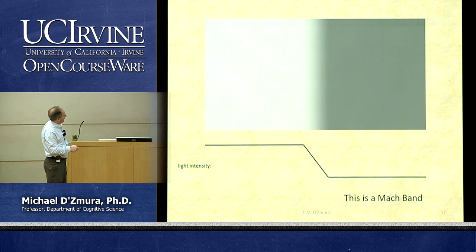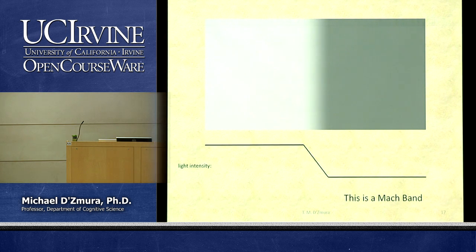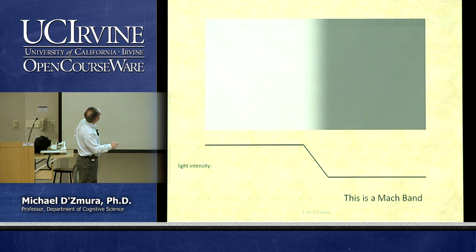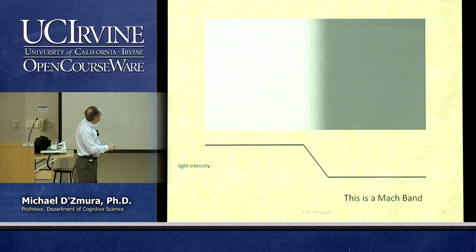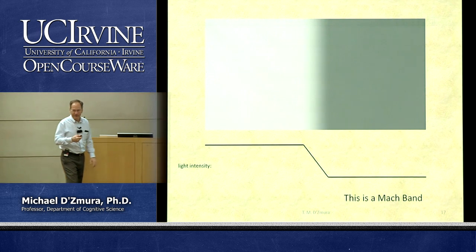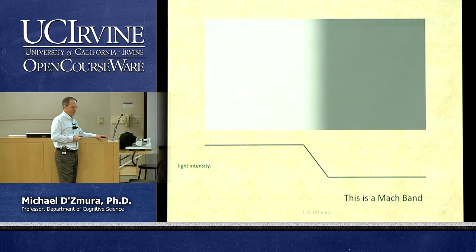A Mach band stimulus has a flat white on the left, then a ramp taking the white down to black, then flat black. Most people perceive a little brightening at the start of the ramp and a little darkening where the ramp meets the flat black — what we see does not match exactly what's being presented. This is thought to result from the process of comparing visual stimulation at adjacent points.